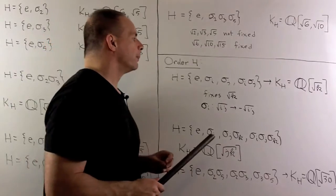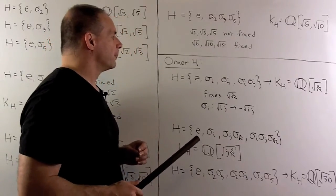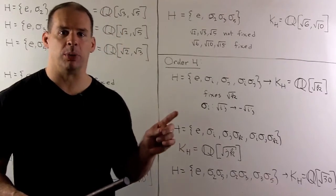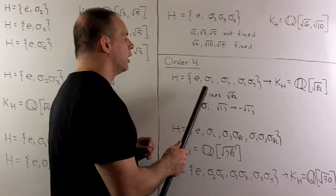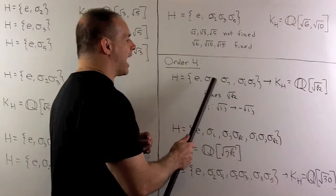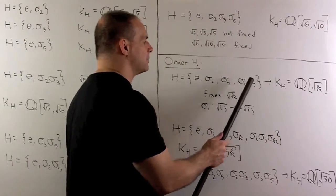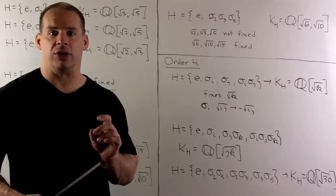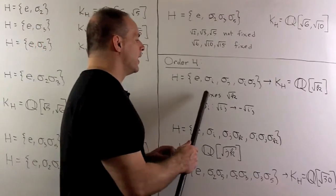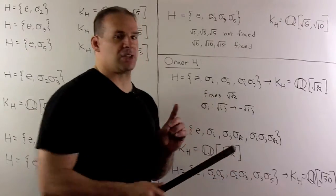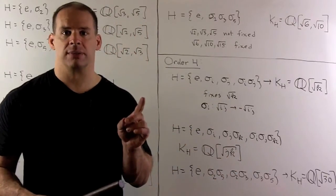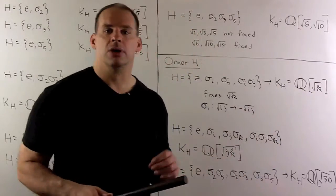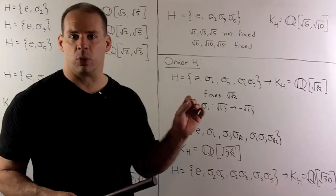For subgroups of order 4, we have three cases. In Case 1, with generators σᵢ and σⱼ, the subgroup also contains σᵢσⱼ. This fixes √k (where k is the unused index), and one can verify no other basis element besides 1 is fixed. So the fixed field is Q(√k). This yields three subfields, one for each choice of the omitted index.